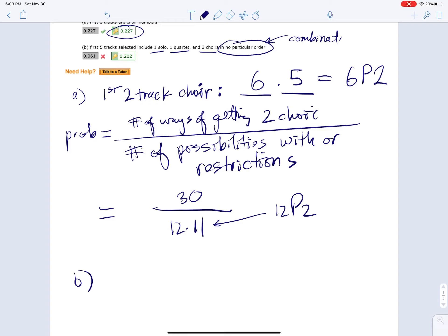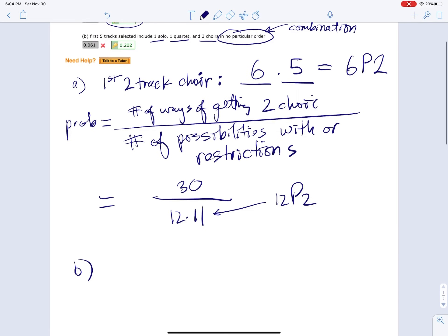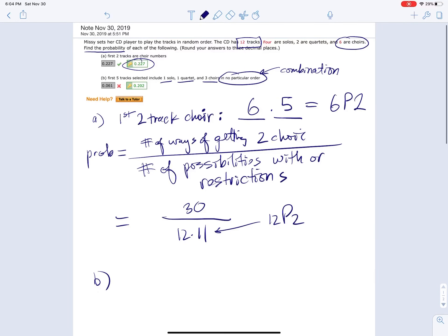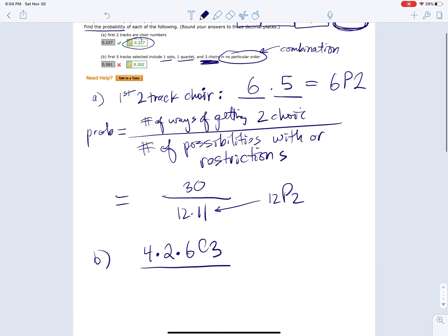Instead of a permutation, so we're going to do a combination. First, one of them has to be a solo. How many solos are there? There are four solos, so four possibilities for that. There's two quartets and we need one quartet, so two possibilities for that. There's six choir and we need three choir, so 6C3. Notice how I'm doing a combination because order doesn't matter.